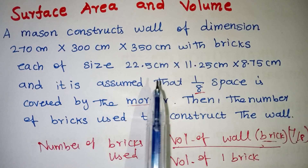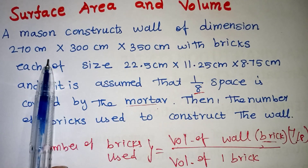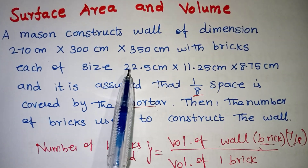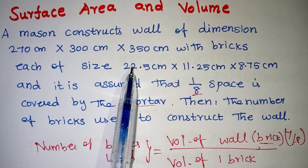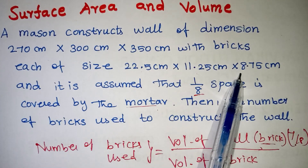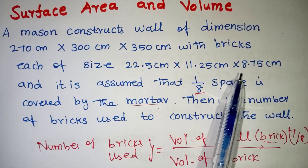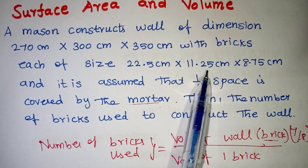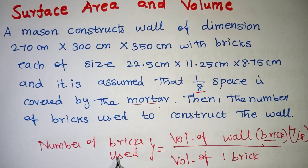One wall is to be constructed. The wall has dimensions: length, breadth, and height. The brick is a cuboid shape with length, breadth, and height. So this is simple — we know the wall's dimension and the brick's dimension, and finding the number of bricks used is easy.